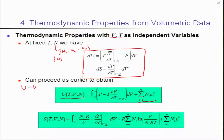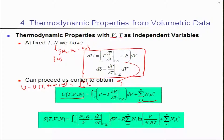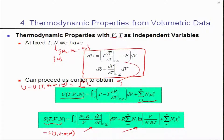So U minus U at T with V equal to infinity is equal to the integral from infinity to V of this term. By rearranging and swapping limits, we get T times the partial derivative of p with respect to T, minus p — which simplifies to p minus theta. Similarly, we can do the same thing for dS, using del p by del T, and we get S minus S at V equal to infinity plus corresponding terms.